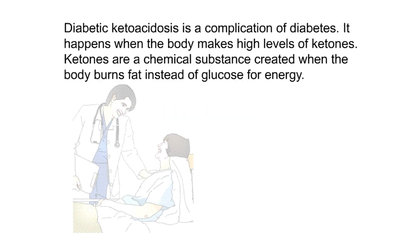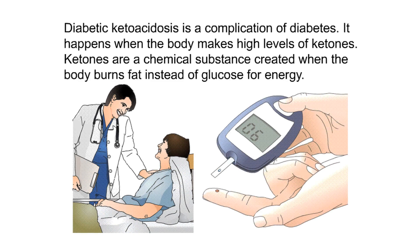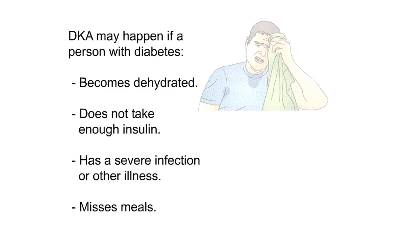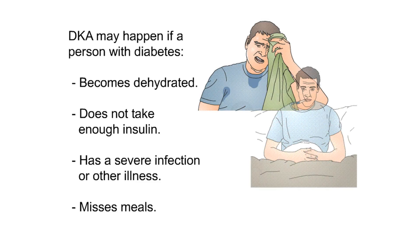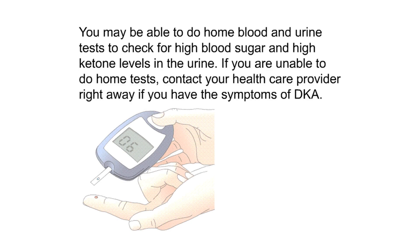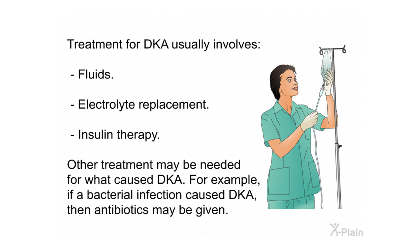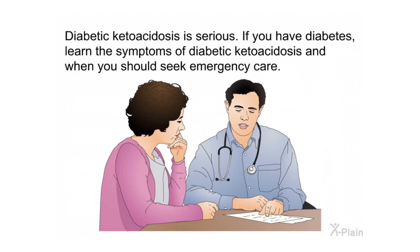Summary. Diabetic ketoacidosis is a complication of diabetes that happens when the body makes high levels of ketones — a chemical substance created when the body burns fat instead of glucose for energy. DKA may happen if a person with diabetes becomes dehydrated, does not take enough insulin, has a severe infection or other illness, or misses meals. Treatment for DKA usually involves fluids, electrolyte replacement, and insulin therapy; other treatment may be needed depending on the underlying cause. Diabetic ketoacidosis is serious — if you have diabetes, learn the symptoms and when you should seek emergency care. Thank you for using Explain.